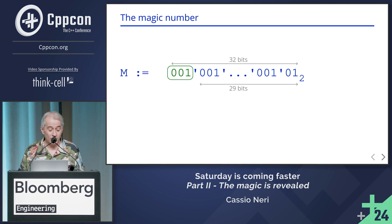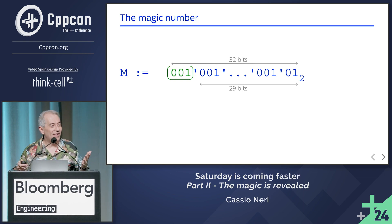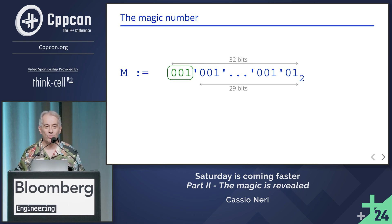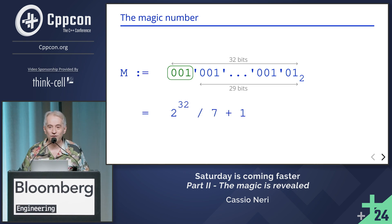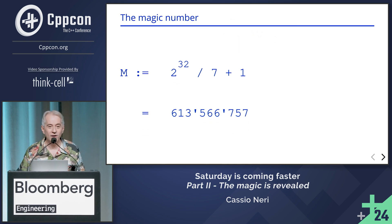We remain with just three bits. Since nobody likes magic numbers in source code, we can backtrack and see how we got here. That's the expression for M, which in decimal is that value. So the magic has been revealed. Thank you very much.